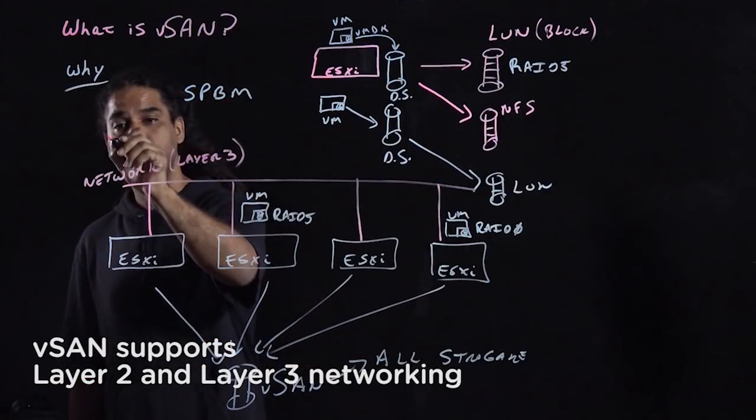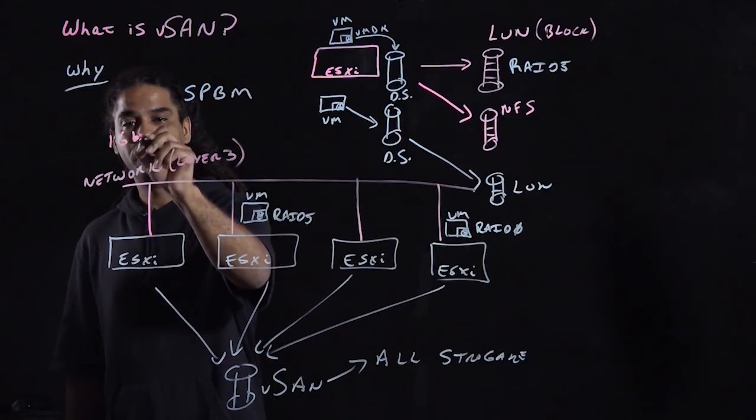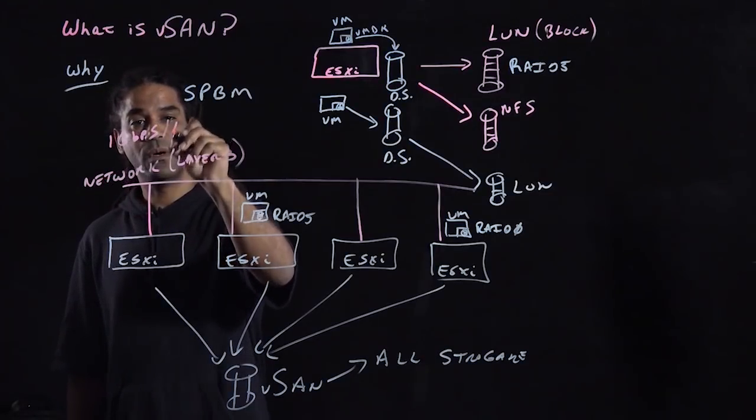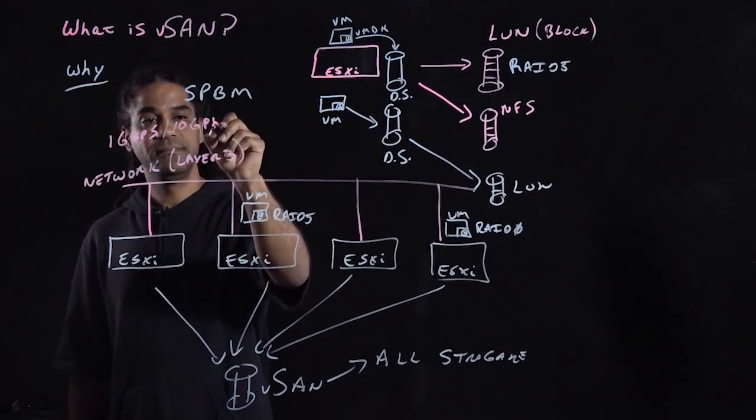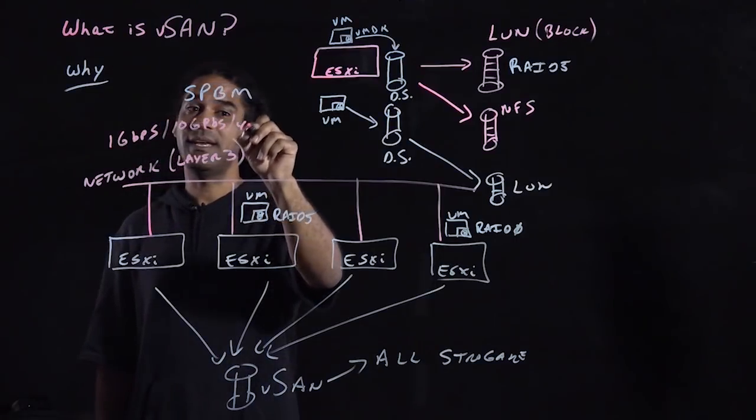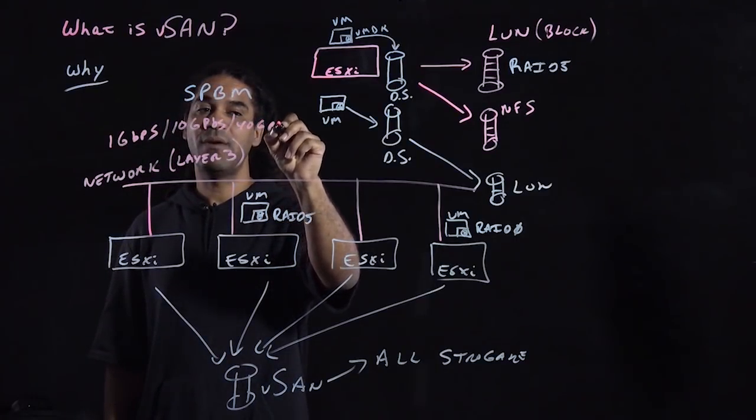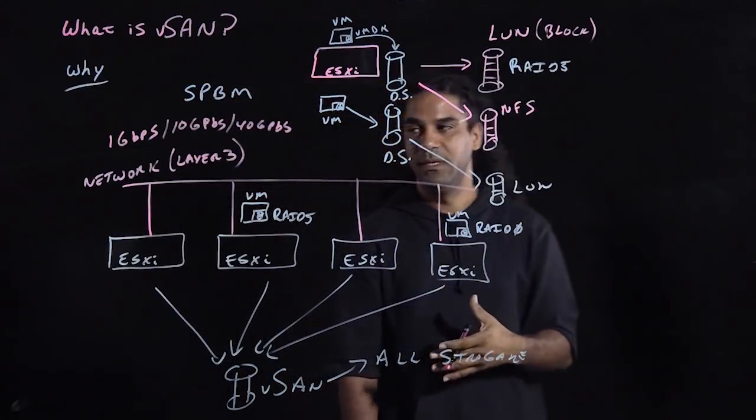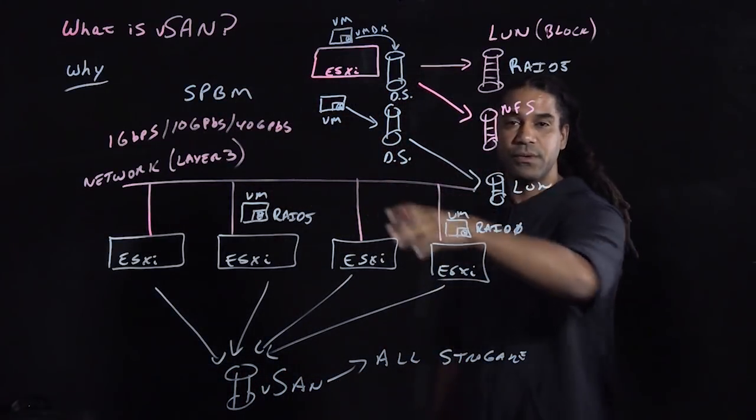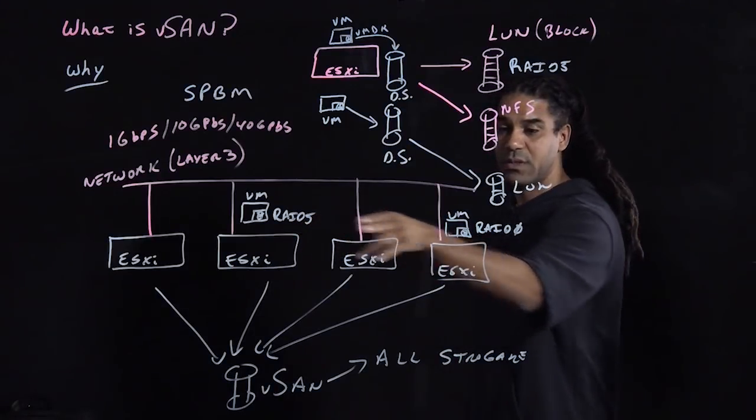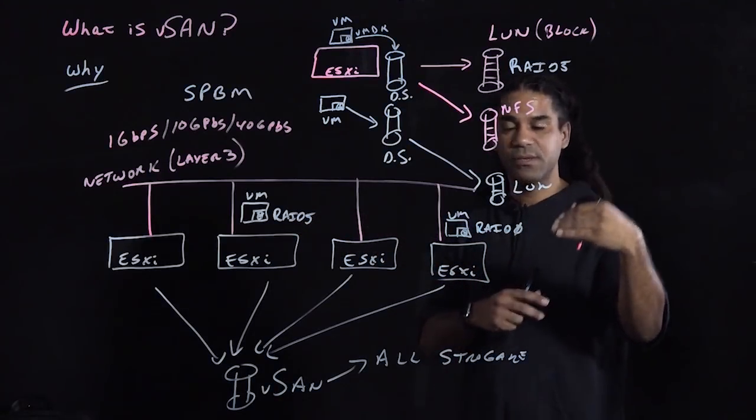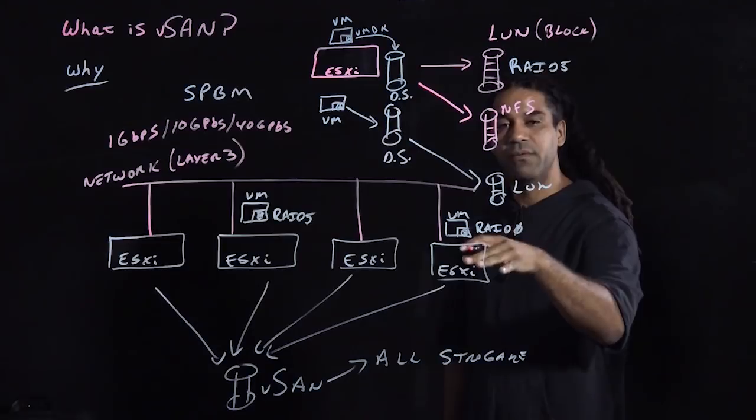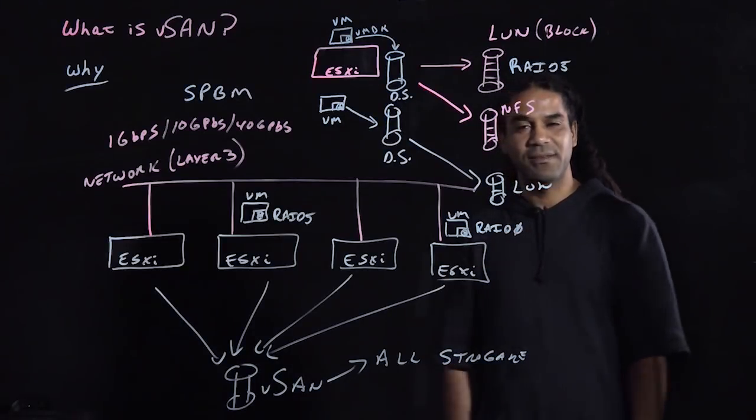vSAN supports 1 gigabit, or 10 gigabit, or 40 gigabit, or however fast you want to make it. vSAN works with all of those. Now which of those you will use, there is a slight dependency on the type of storage that you use, which is in a disk group—there is hybrid and all-flash—and we'll be discussing that in a future video.